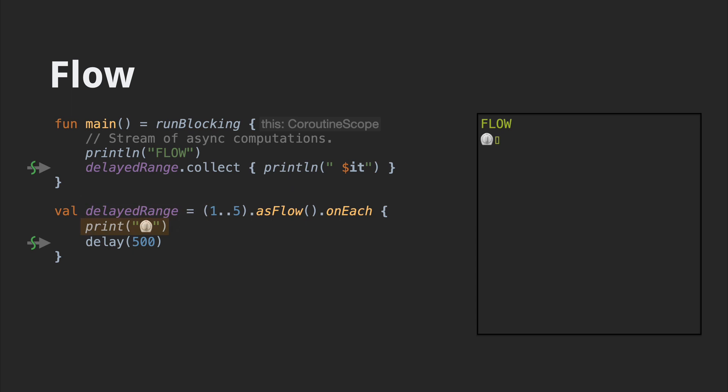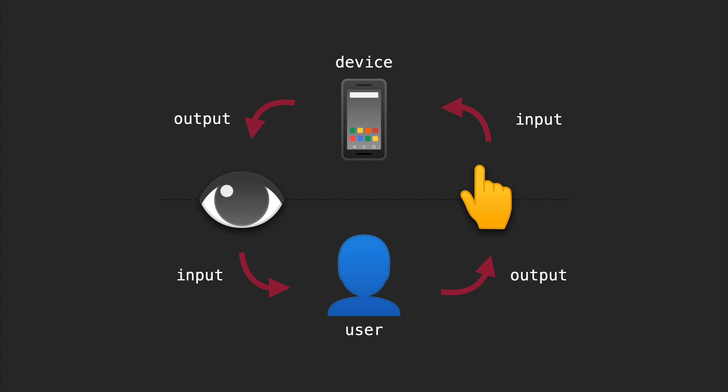When we start up the sequence, before each collection we print the timer, delay for 500 milliseconds, and then print the current range value from the flow. That process repeats until the whole flow exhausts the range and we terminate.